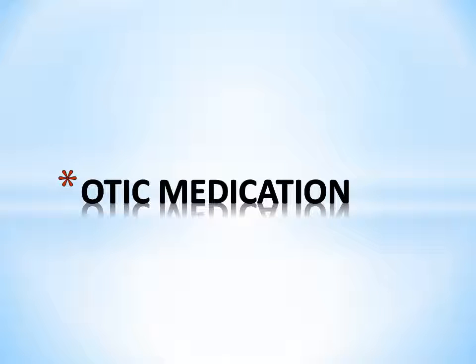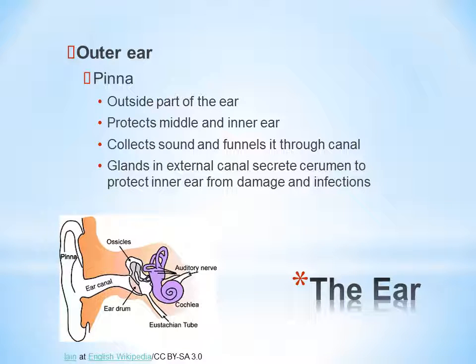This picture is on otic, or ear, medication. Here are some anatomy terms for the ear. The pinna is the outer or visible part of the ear. It protects the middle and the inner ear, collects the sound, and funnels it through the canal.